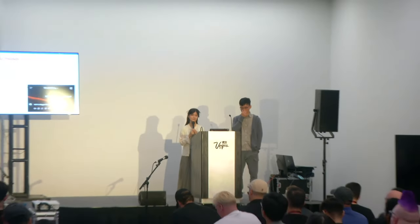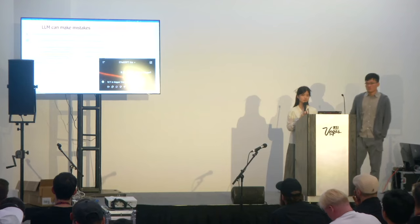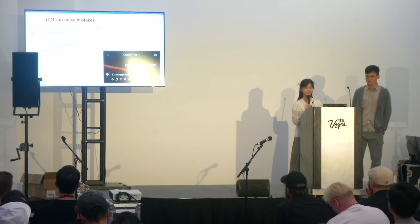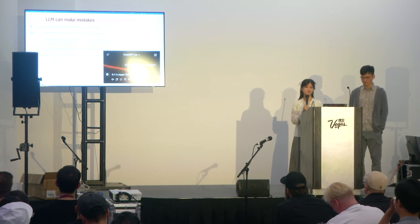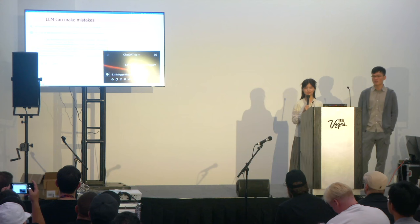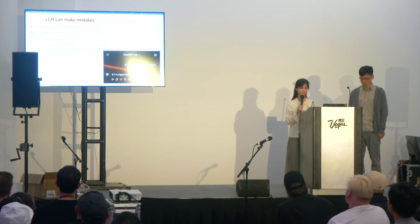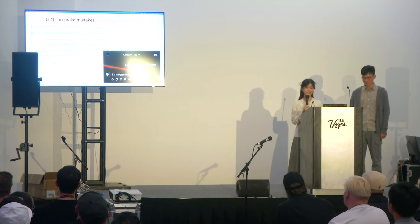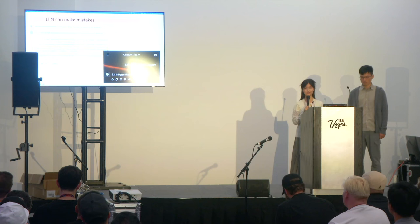However, LLMs can make mistakes. Here are two famous examples: when Google introduced their chatbot, it made a factual error during its very first demo. Another instance involved ChatGPT, which confidently asserted that 9.11 is greater than 9.9 — a mistake even an elementary student would recognize. These errors stem from their tendency to state incorrect information as facts. LLMs often hallucinate; they tend to make up information because they are essentially auto-complete systems based on probability rather than facts.